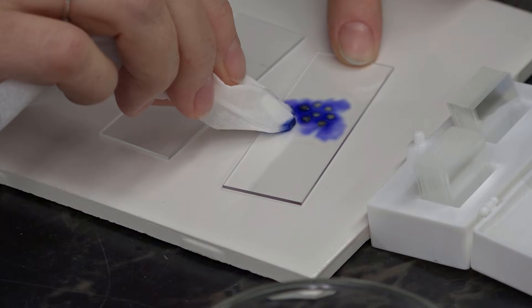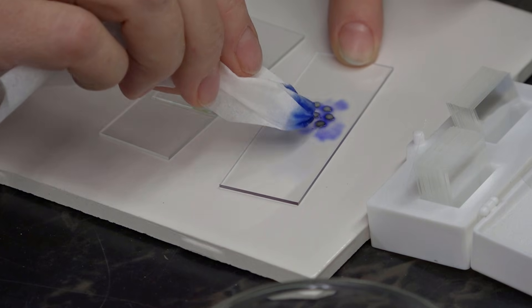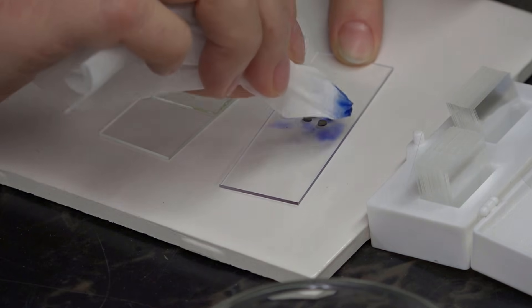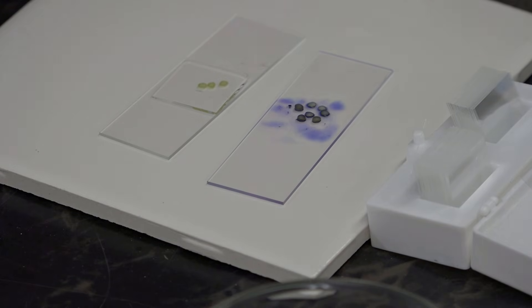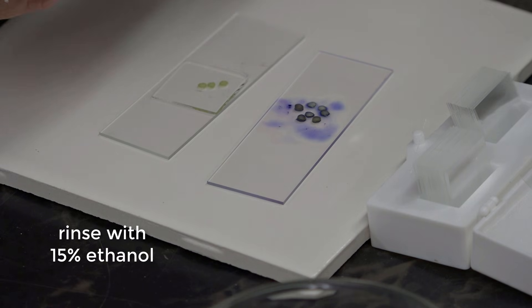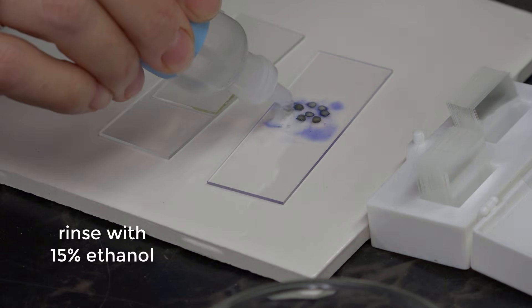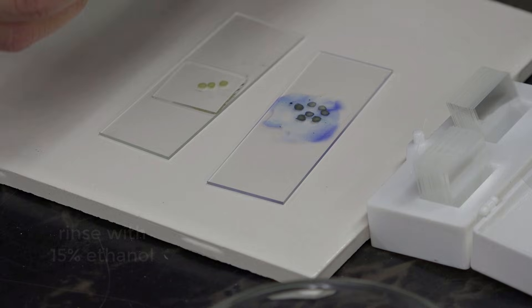Now we're going to draw off the stain. We're going to use 15% ethanol solution to rinse these sections, and that's just going to help us remove some of the excess stain.